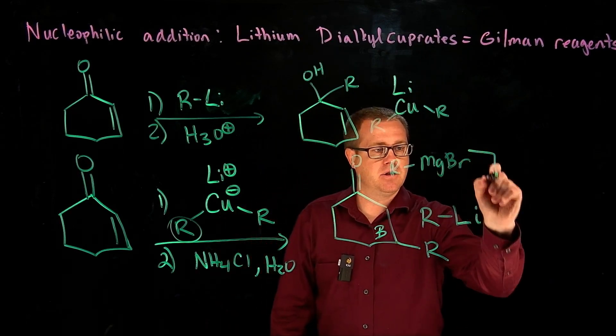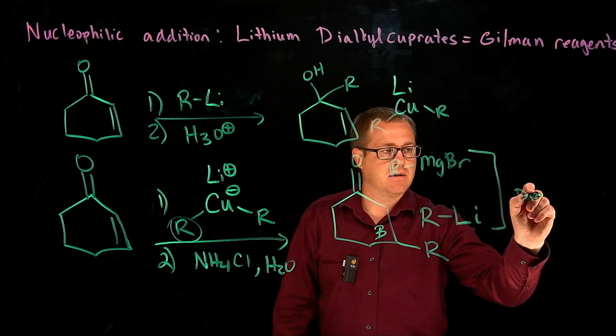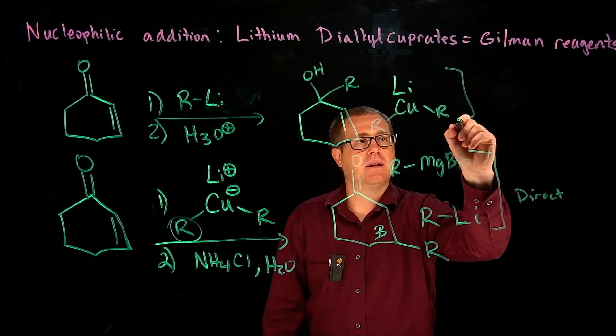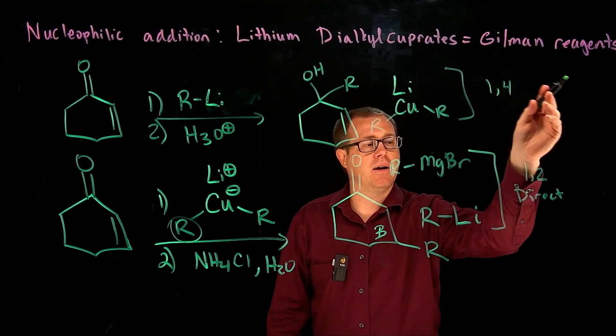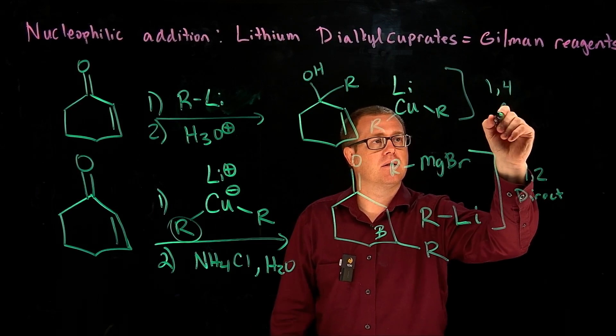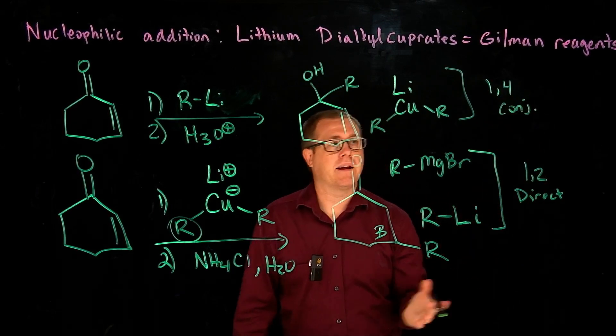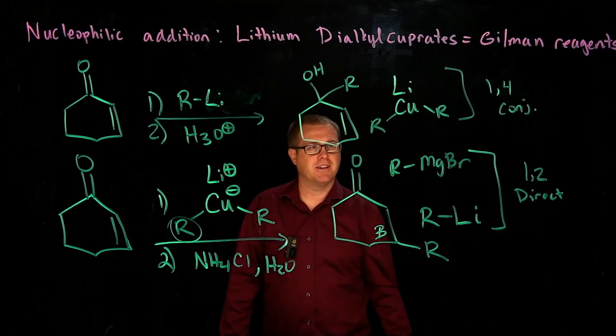And we've already seen that these two add direct, and this one adds in a 1,4. So that's 1,2 direct, 1,4 conjugate, or Michael addition. So many ways to talk about these things.